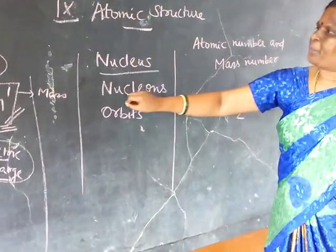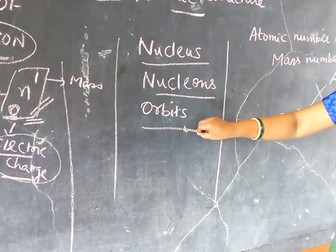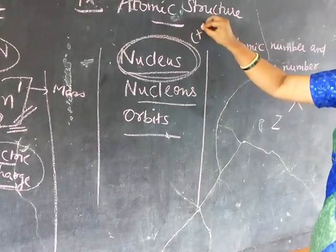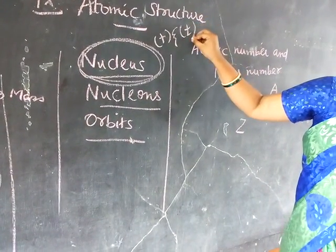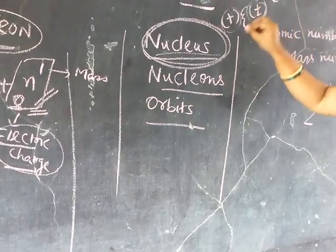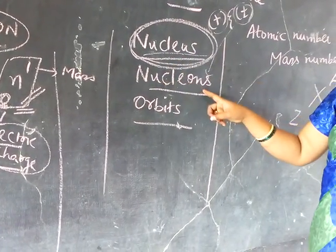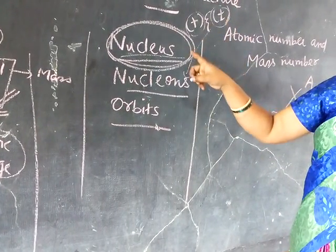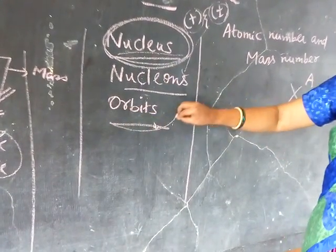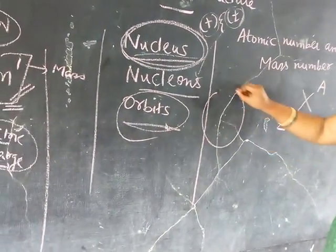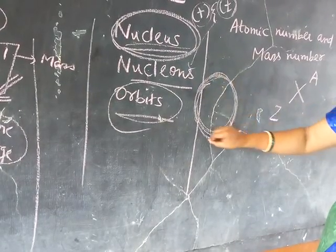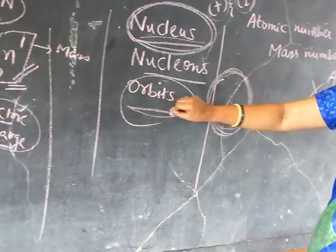Here there are some topics: nucleus, nucleons, orbits. What are the subatomic particles present in the nucleus? Protons and neutrons, collectively present in the nucleus of an atom. Protons and neutrons together we are saying as nucleons. The protons and neutrons present in the nucleus of an atom are said to be nucleons. Next, orbits — the circular path of an electron is said to be orbit, based on Bohr's atomic model.